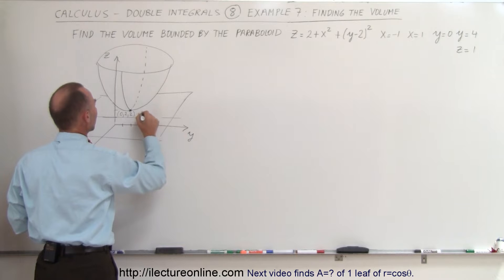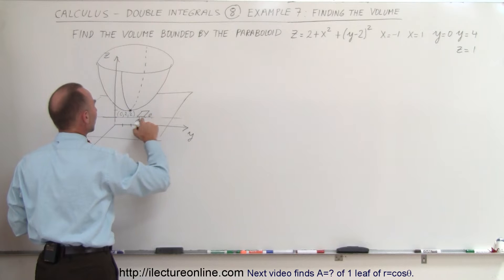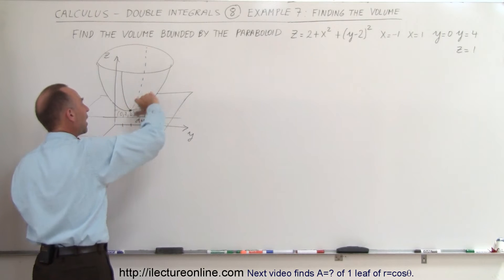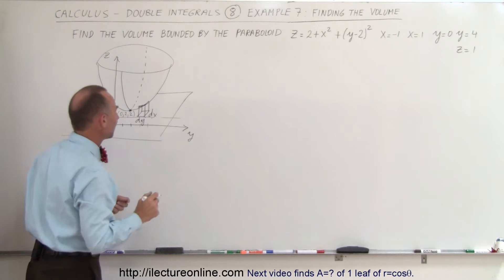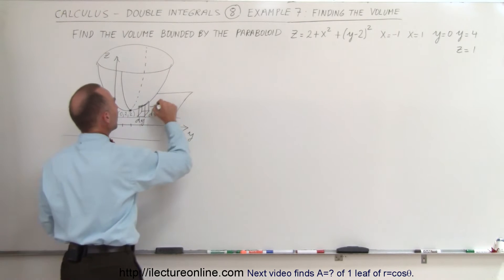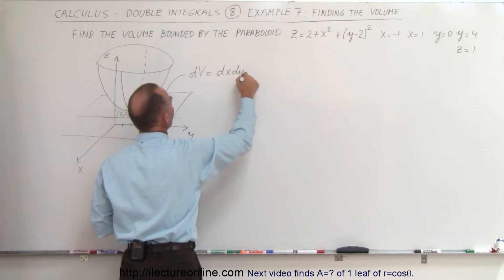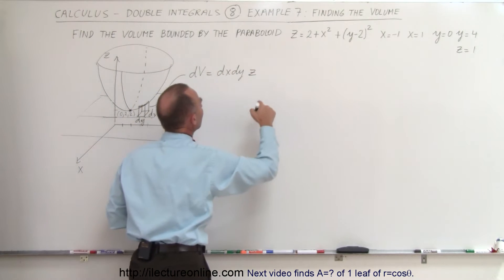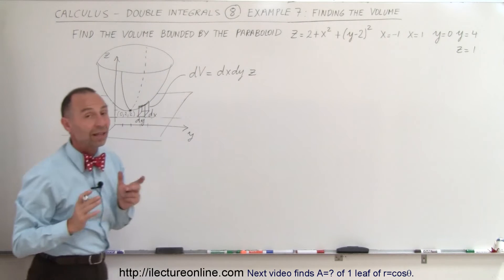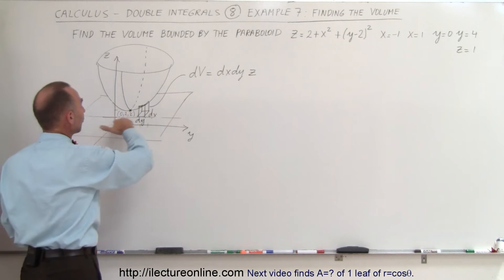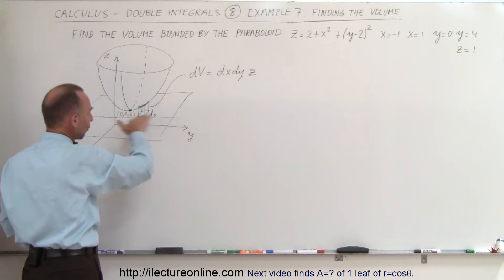To visualize the volume element, the base is going to be dx times dy, and then we go up to the top, which is defined by the paraboloid. So that's my small dV element — it's dx times dy, and the height is defined by z, where z is defined by our paraboloid equation.